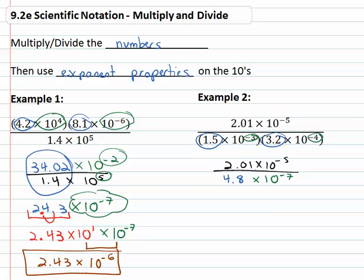Then we're ready to divide. 2.01 divided by 4.8 is 0.41875. Then we'll use our exponent properties on the tens, times ten to the, being very careful that we're doing negative five minus negative seven. Make sure we're subtracting a negative, which means we add the opposite, we have the second power.